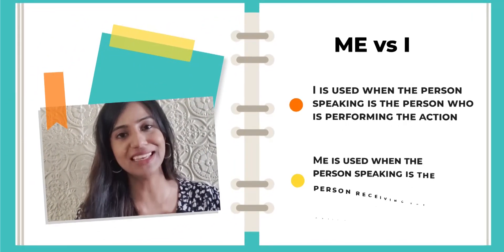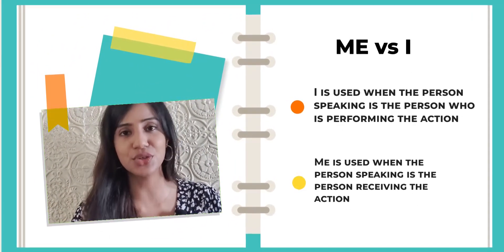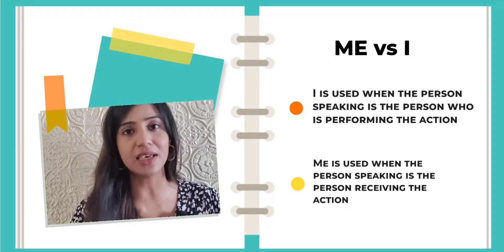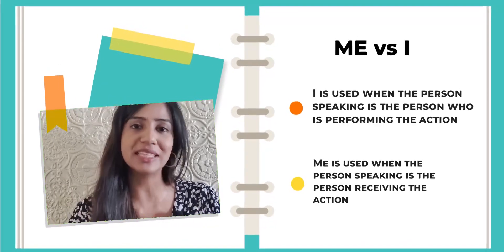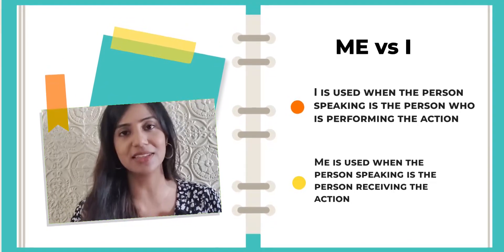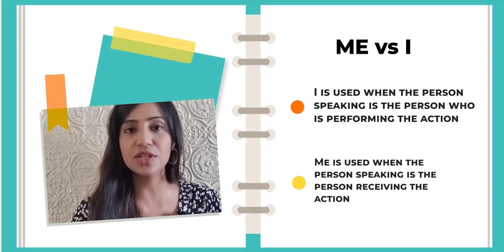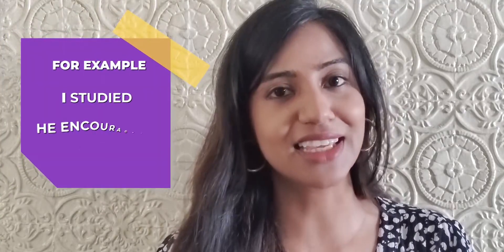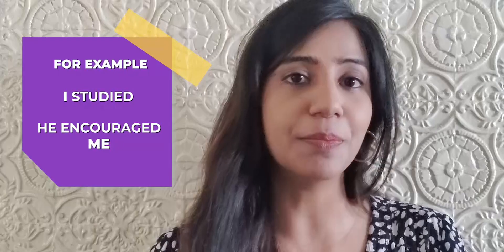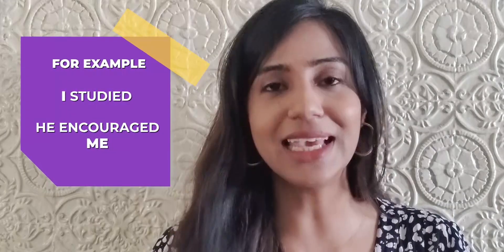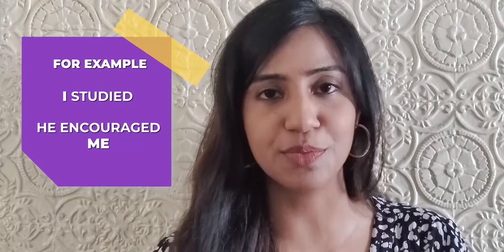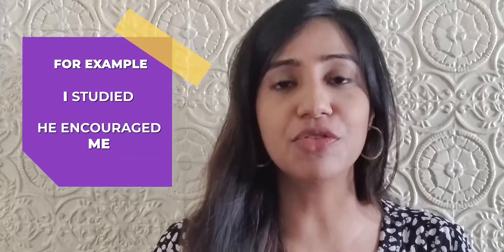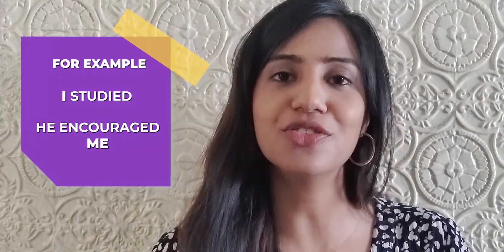Number 3: me versus I. I is used when the person speaking is the person who is performing the action. Me, on the other hand, is used when the person speaking is receiving the action. For example: I studied. Or: he encouraged me. So me is receiving the encouragement, and I is performing the action of study.